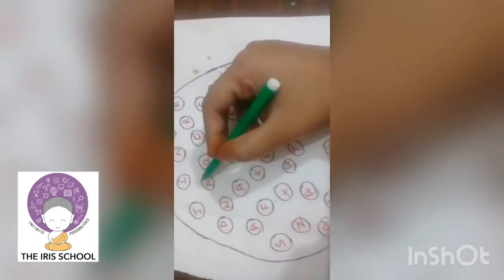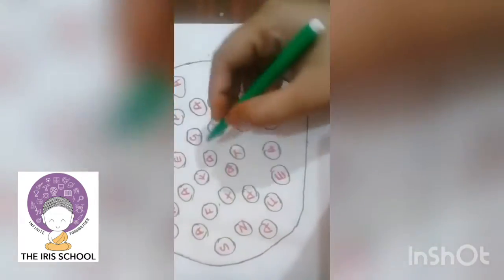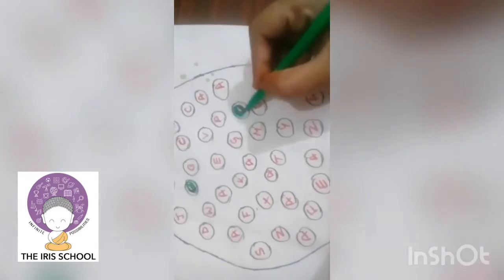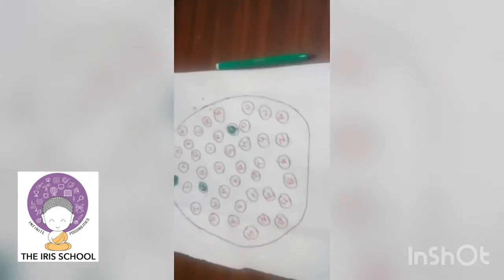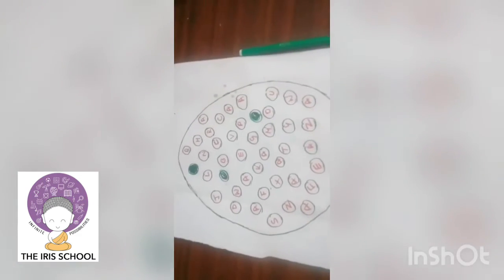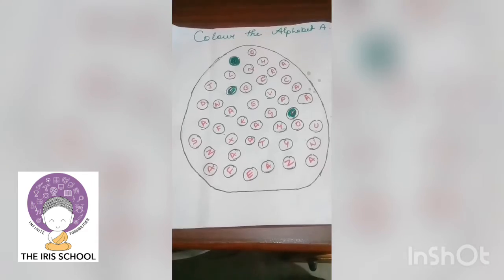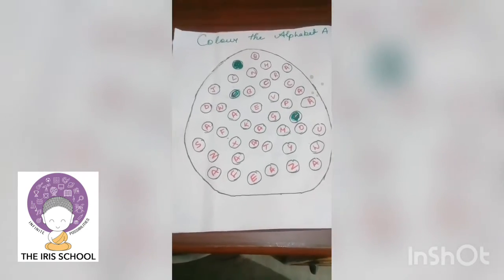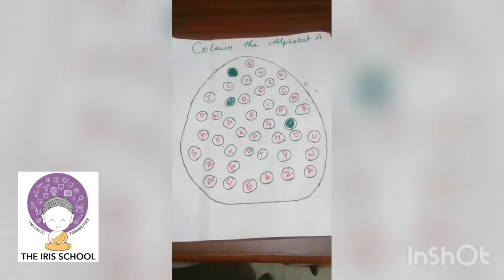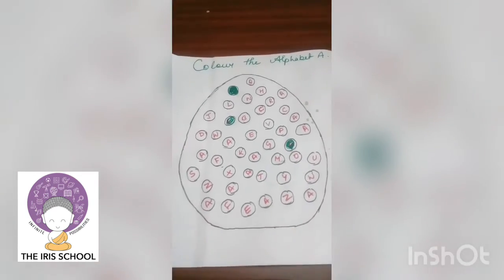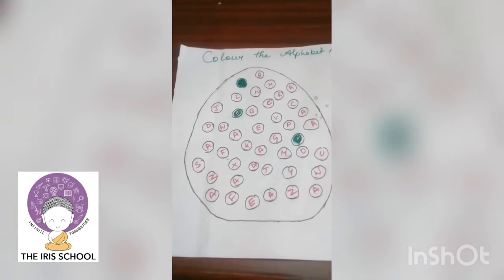Here A is written, so I will color this. By doing this activity, the child will be able to recognize alphabet A. As well as by making this circle, the activity will become more innovative and interesting, and the child will take interest in doing this activity.